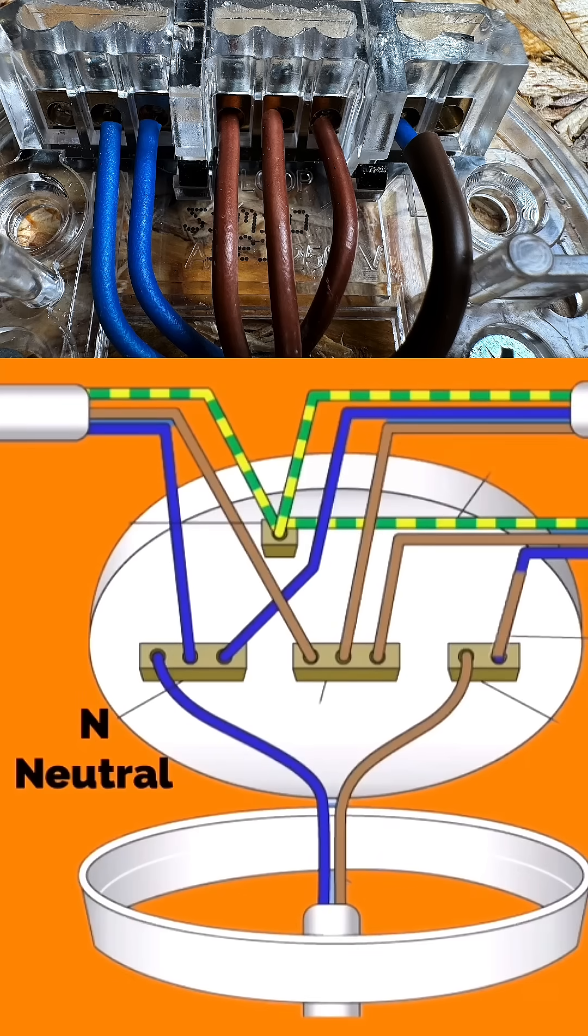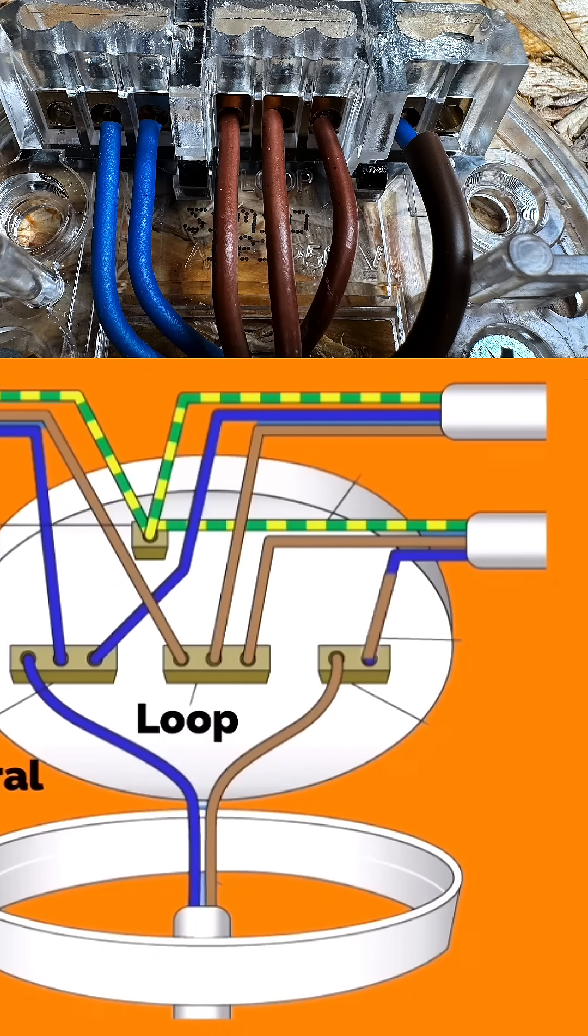The centre block of three is identified with the word loop and has the permanent line connections coming in and out of it. The far right-hand side is usually identified with the letter L, but is actually a switching line conductor that can give you control over the lamp by turning it on and off.